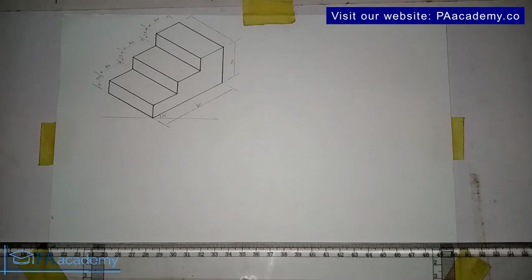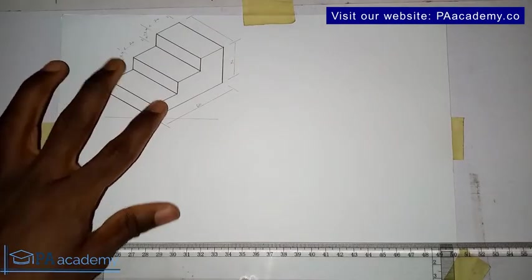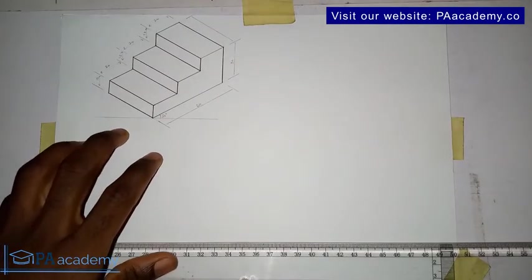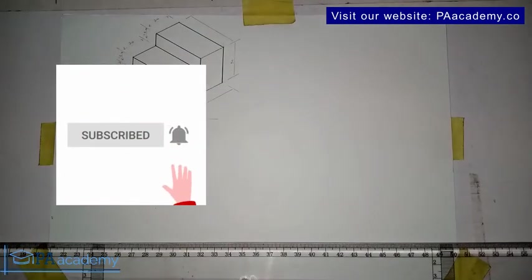Hello and welcome back to isometric drawing. This is drawing eight and this is what you are going to be replicating. If you look at this drawing, it's looking like a step, a three-step: one, two, three. So how do we go ahead to draw this using isometric drawing?